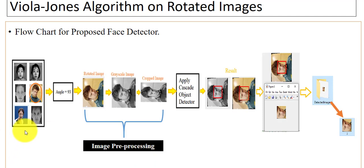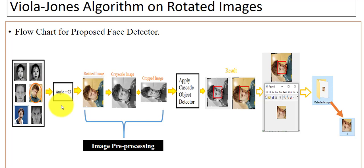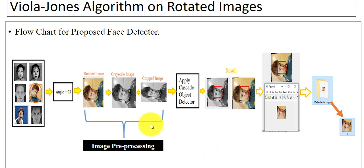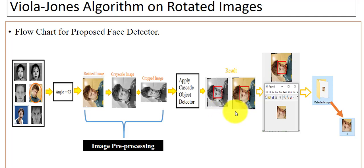First, we have the face dataset — from this dataset we will select any image like this one. Suppose I selected this image. Now we ask the user to enter any angle for rotation. Here the angle entered by the user is 93 degrees. After that, we apply image pre-processing operations — image rotation, conversion, and resize. After pre-processing, the cascade object detector is applied and you can see the face detected at 93 degrees.